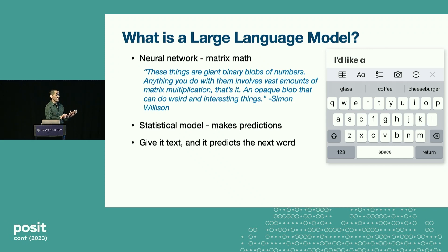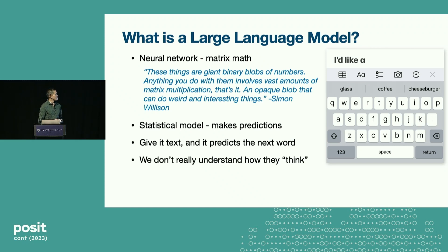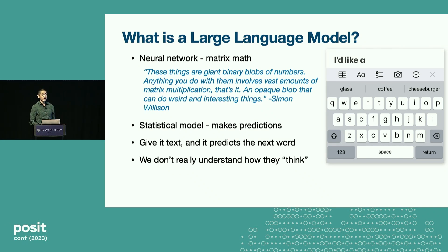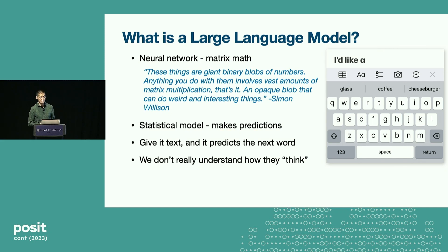The model used on your phone is going to be way simpler than these large language models that do the really interesting stuff. One other thing to know about them is that we don't really understand how they think. We understand how they work at a low level, but at a higher level we don't know how they conceptualize a chair or anything like that. It's still sort of a mystery.